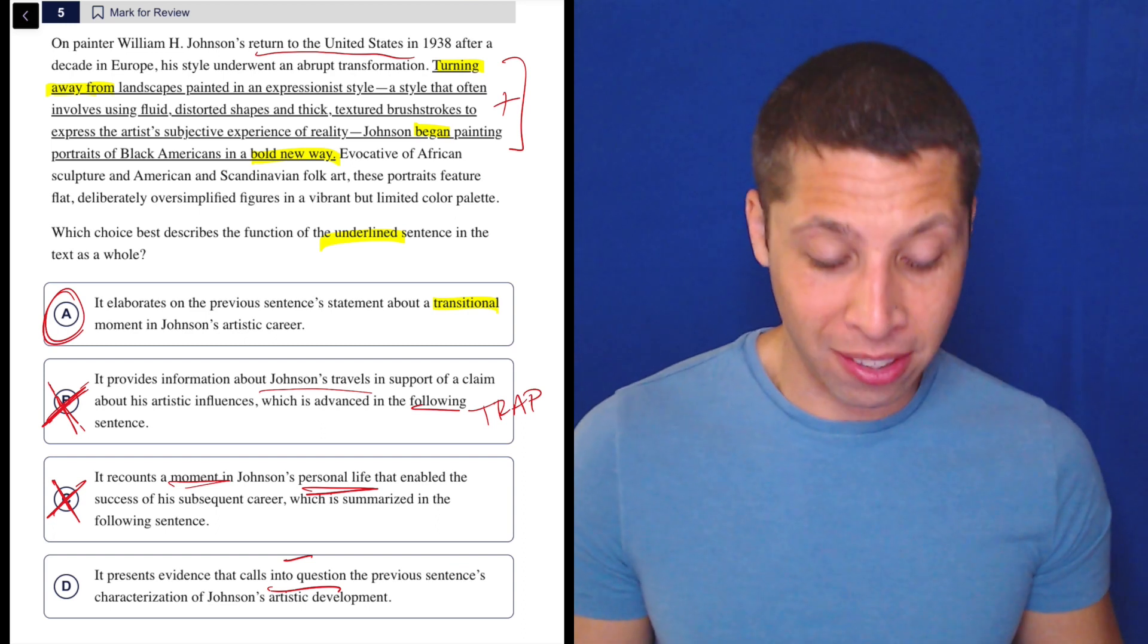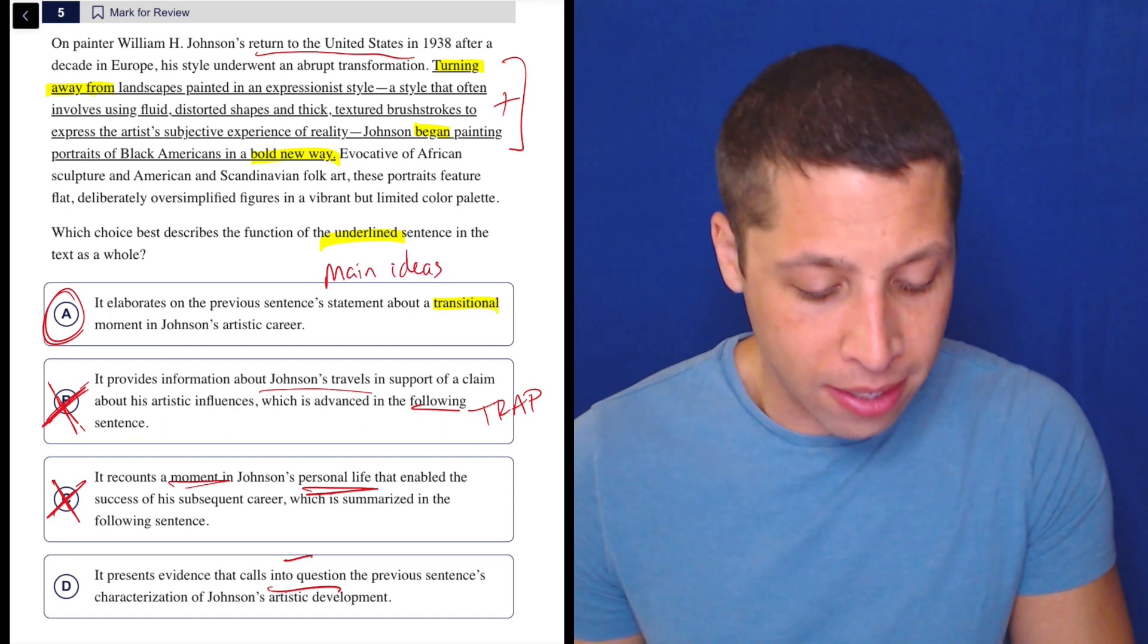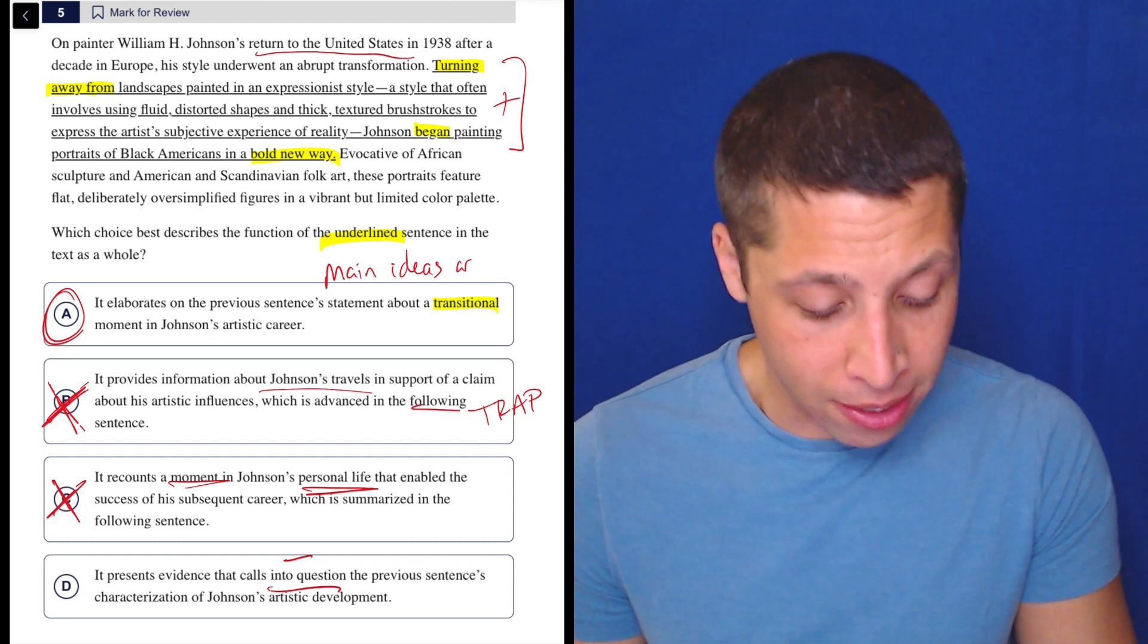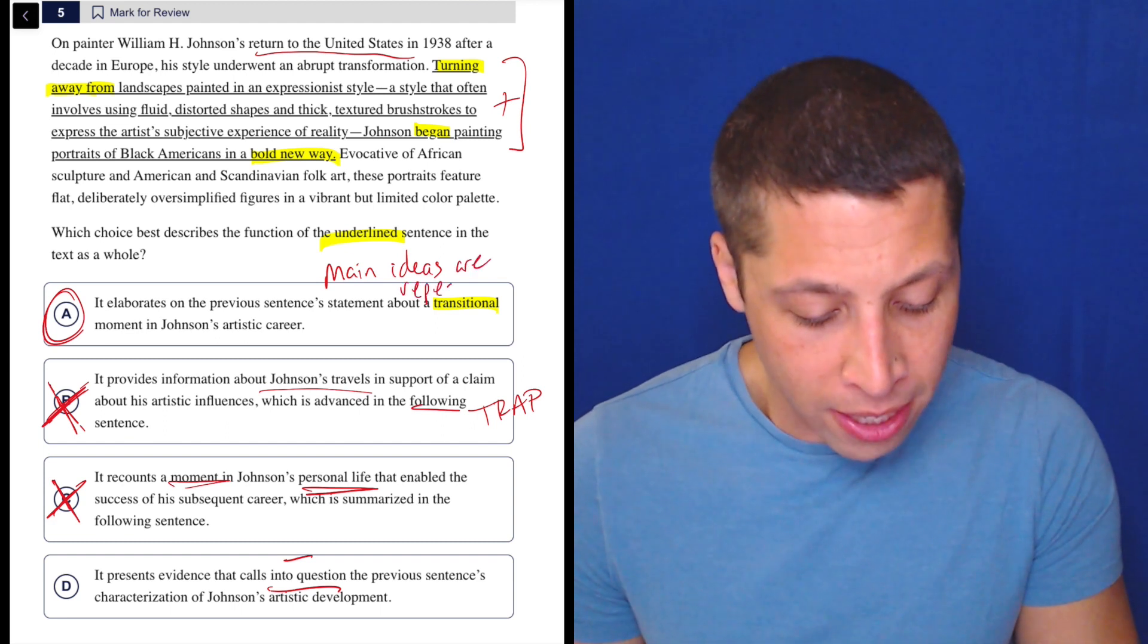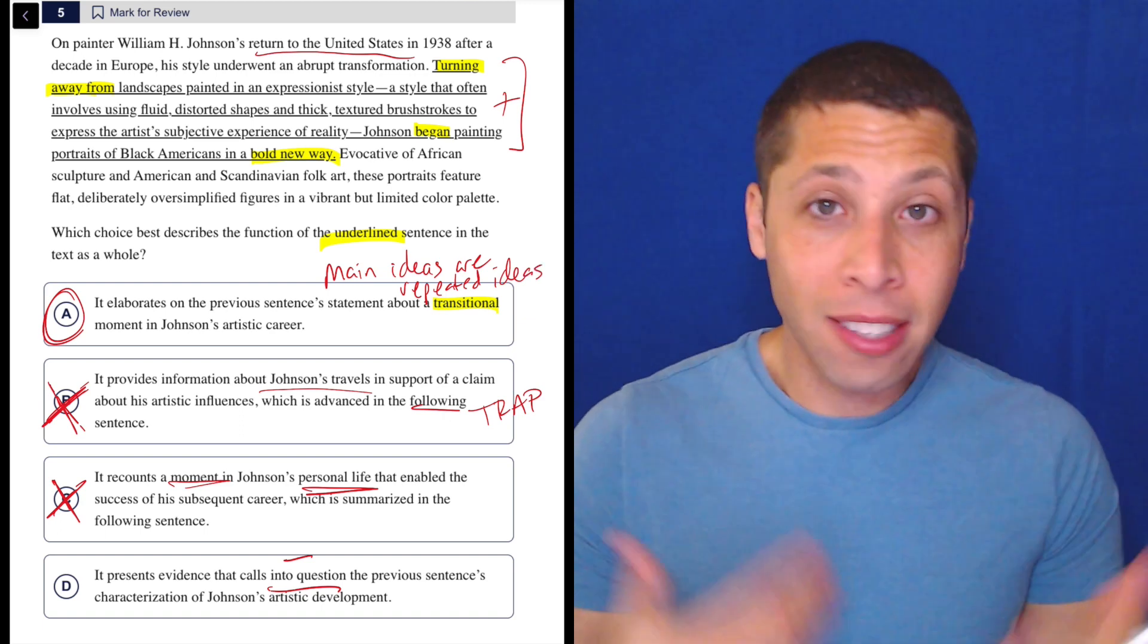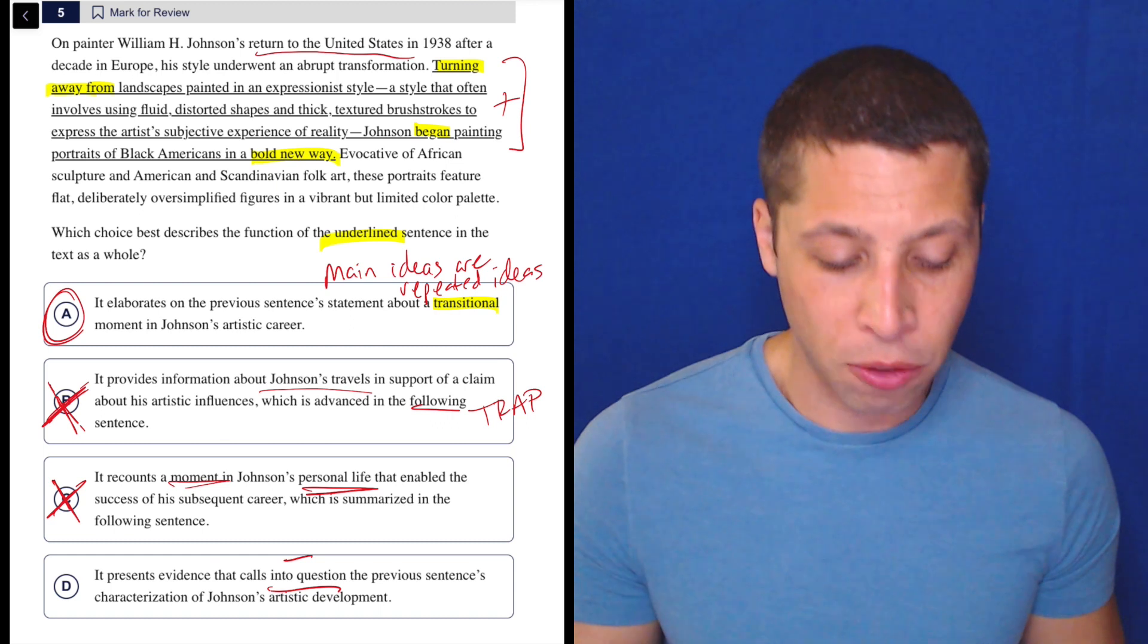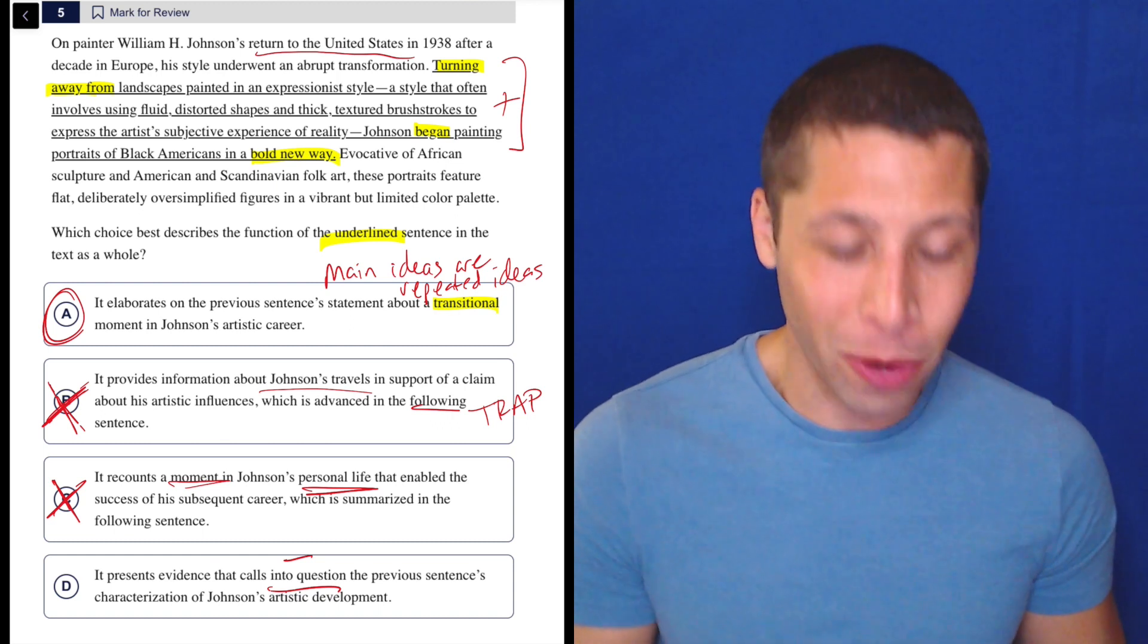Like we have, I'll write this down. It's such a great way to think about the SAT reading passages. Main ideas are repeated ideas, right? That one sentence has lots of ideas that talk about or lots of words that talk about the idea of a transition, a transformation. And then we see that exact same word in the choice.